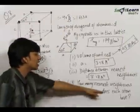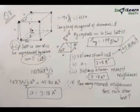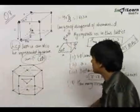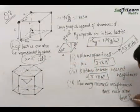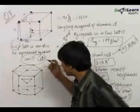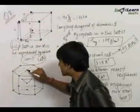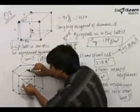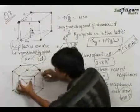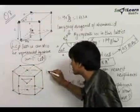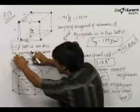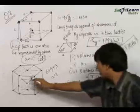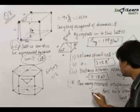For the coordination number — how many nearest neighbours each atom has — consider any atom in the HCP structure. It is joined to 6 atoms in its own plane. It also rests tetrahedrally on 3 atoms below, and there are 3 atoms above it as well. Therefore, the coordination number is 6 + 3 + 3 = 12. Every atom in the HCP structure has 12 nearest neighbours.